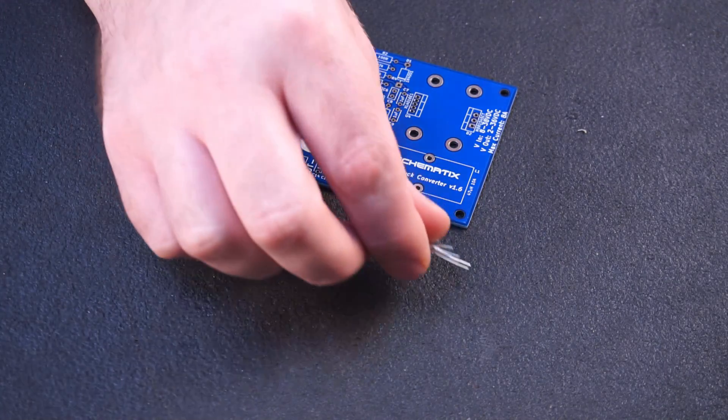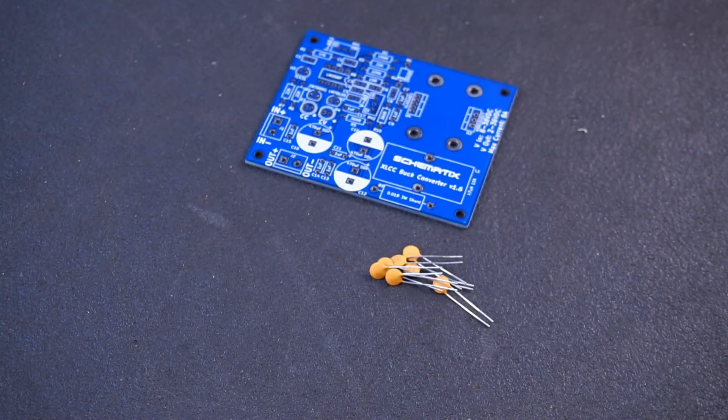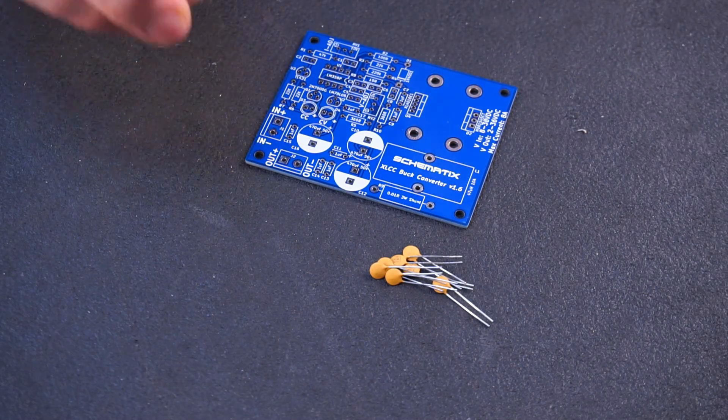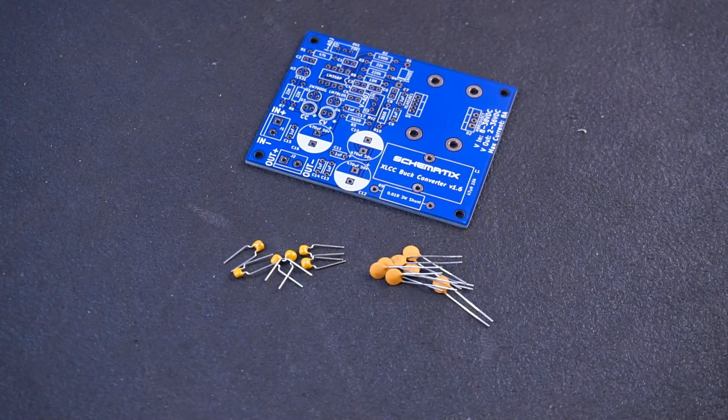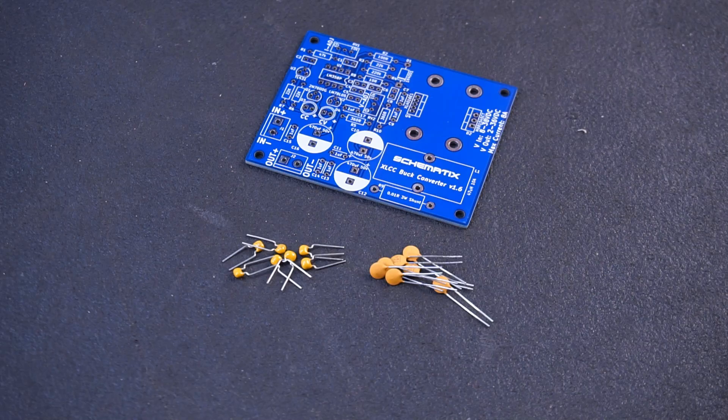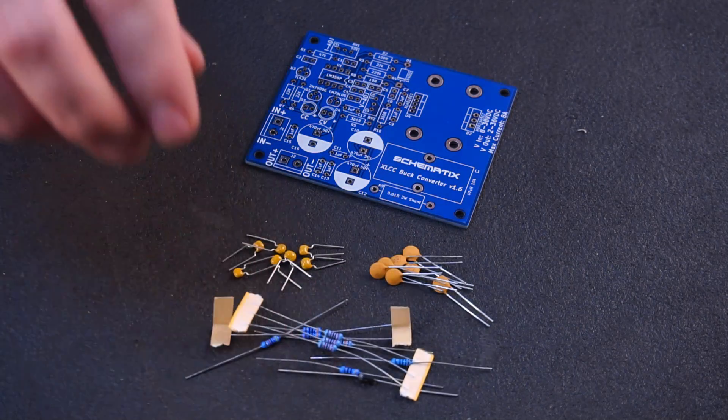When populating a printed circuit board with electronic components it's good practice to install the smallest components first. I'll start assembly by installing the ceramic caps, resistors and diode.